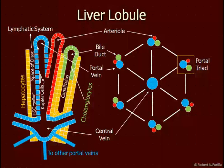Moving over to here, we can see the portal vein leads into a large sinus, which empties into the central vein. There are several of these coming in. In the central vein, we'll find Kupffer cells, and the endothelial cells are discontinuous. That allows Kupffer cells and microorganisms to pass between the cells and enter this little space here called the space of Disse.